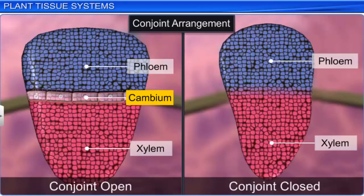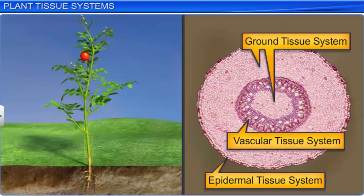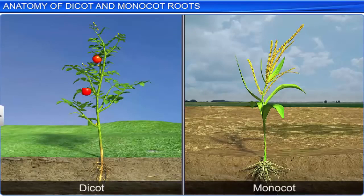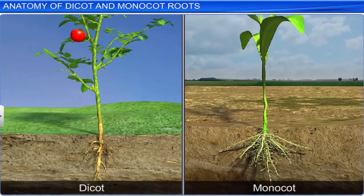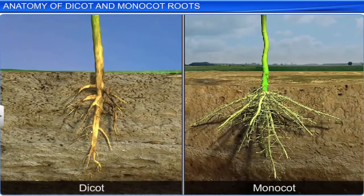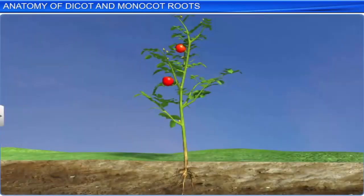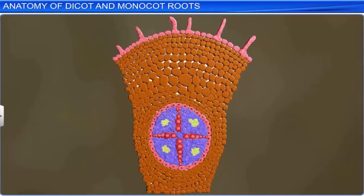The plant body has an intricate arrangement of various tissue systems that aid its growth and development. The root is one of the key organs that helps distinguish between a dicot and a monocot plant. Let's observe the transverse section of the matured zone of roots to understand their internal structure. We'll begin by studying the anatomy of a dicot root. The outermost single-layered tissue of the dicot root is called the epidermis, on which you will find some extended epidermal cells which are unicellular root hairs.